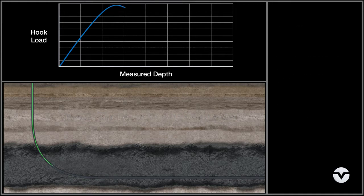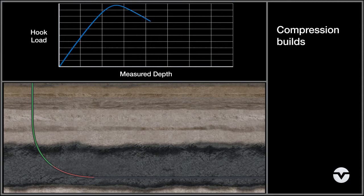As the string progresses through the build section, the side loads experienced in the lower part of the string increase, resulting in an increase in drag, and causing the lower part of the string to become loaded in axial compression.